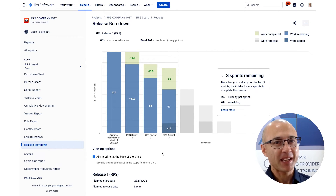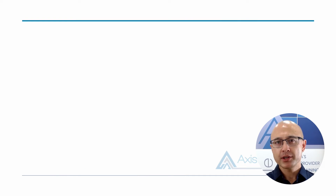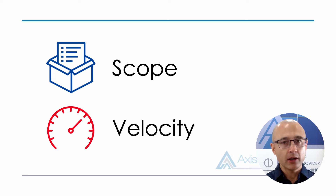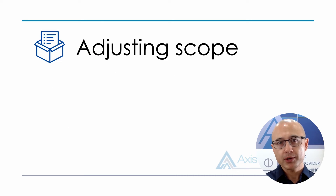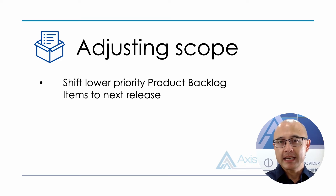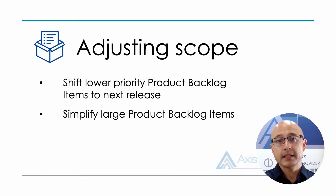Now let's imagine the team is not going to deliver on time — what can you do to get back on track? There are two levers: scope and velocity. As an agile coach I always suggest looking at scope first. By virtue of a prioritized product backlog, the items at the bottom are less valuable, so it might be simple — just shift lower priority items to the next release. You can also look for larger product backlog items — 20, 40, or 100 points — and ask if there's an easier way to deliver those requirements.